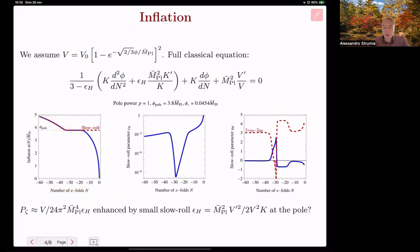As a consequence, the slow roll parameter Epsilon goes from the standard value to something much smaller, enhancing the power spectrum, and the eta parameter signals the breaking of slow roll.